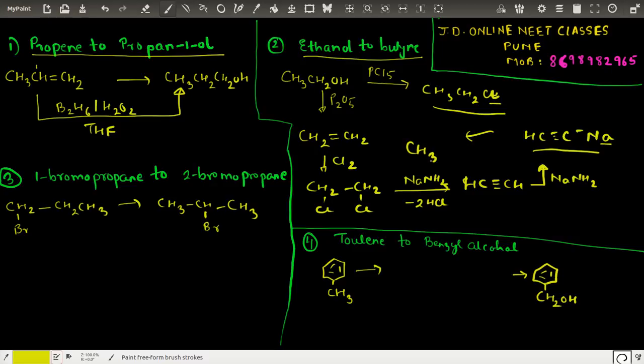So yes, we have converted ethanol to butyne by making two fractions of it - one converting to chloride and second to the sodium acetylide, and then we have the coupling reaction.